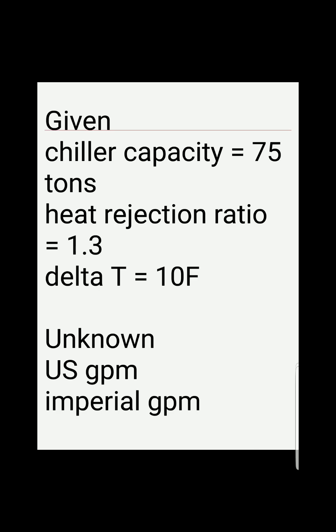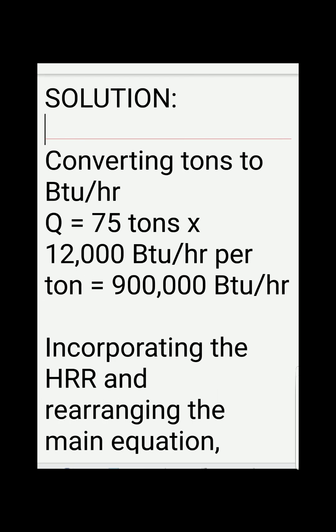For the solution, first we need to convert our given tonnage to BTUs per hour. To do that, we multiply 75 tons times 12,000 BTU per hour per ton, giving us a capacity of 900,000 BTU per hour. The next step is to incorporate the heat rejection ratio into the main equation.